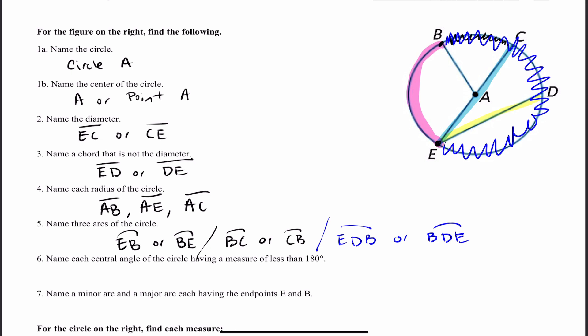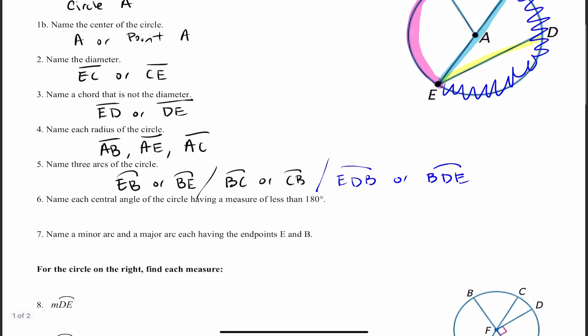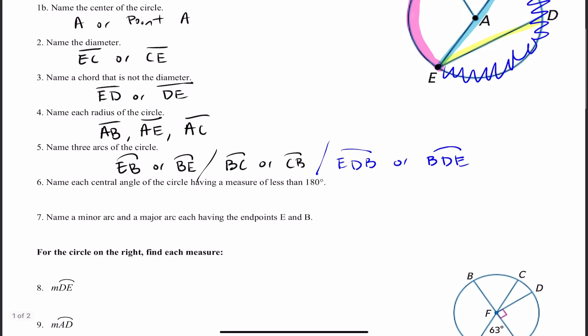Number 7: name a minor arc and a major arc, each having the endpoints E and B. I've already explained that. So I want you to consider what I just said and apply that to number 7. Number 6 — I skipped it — five and seven do relate to each other.